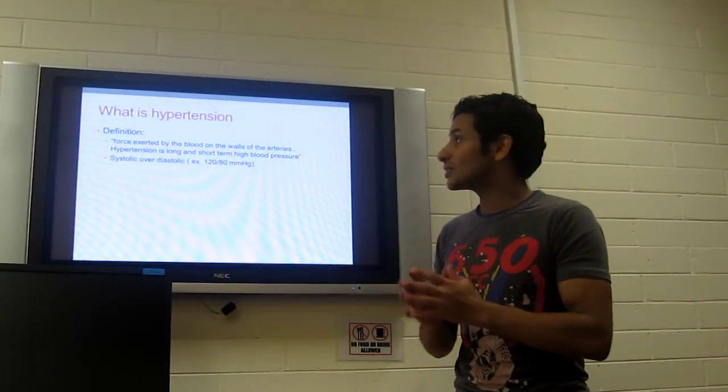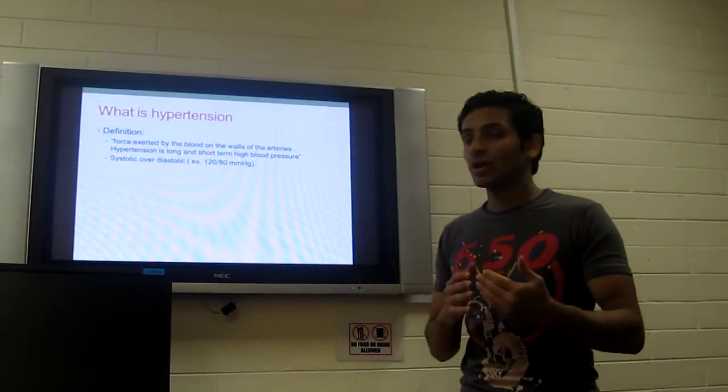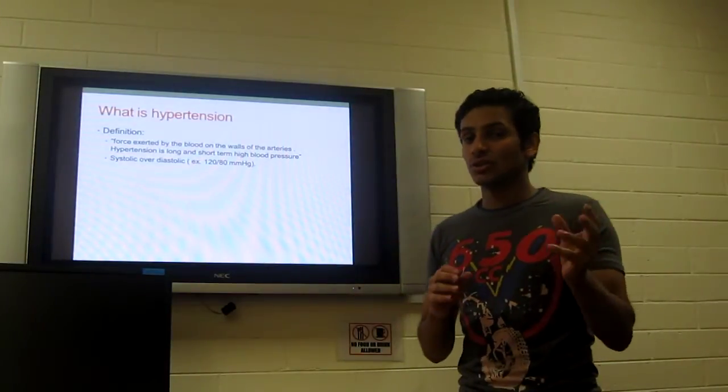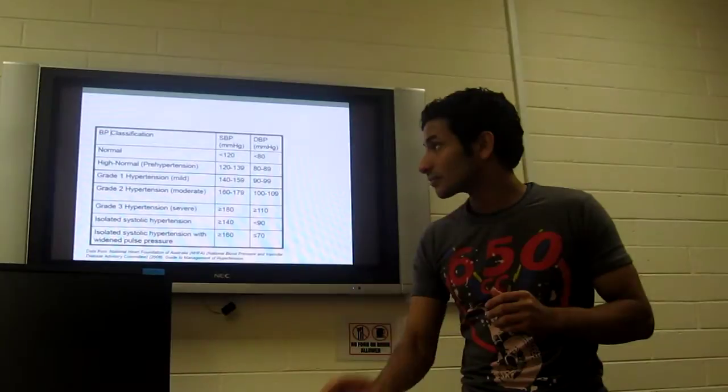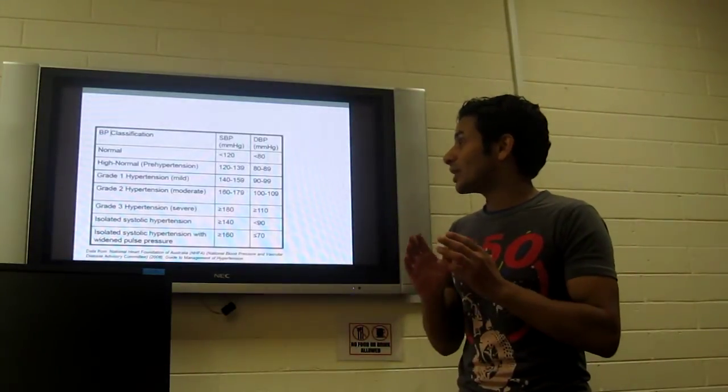Hypertension is defined as forces exerted by the blood on the walls of the arteries. Hypertension is long and short-term high blood pressure. It is written as systolic over diastolic. These are the blood pressure classifications.